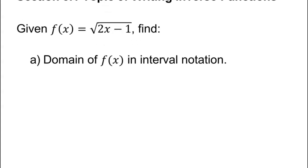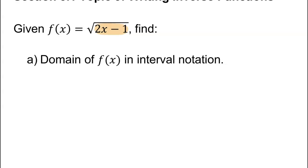We're not writing the inverse just yet — they just want us to find the domain of the square root function. It's a great review problem from section 1.3. We highlight that radicand because the domain of a square root function is always that radicand greater than or equal to zero.